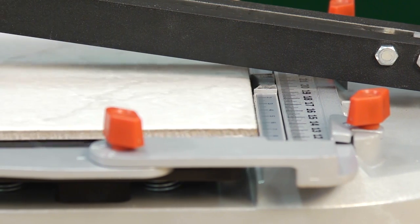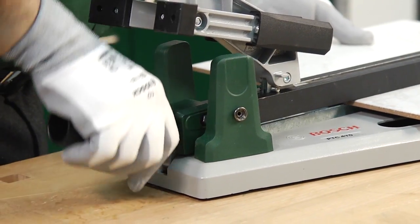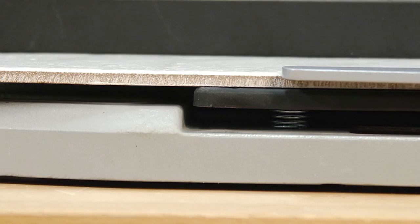The tile is placed flush against the guide edges at the front and fixed using the clamping rail. Thanks to its integrated spring mechanism, the rail automatically adapts to the thickness of the tile.